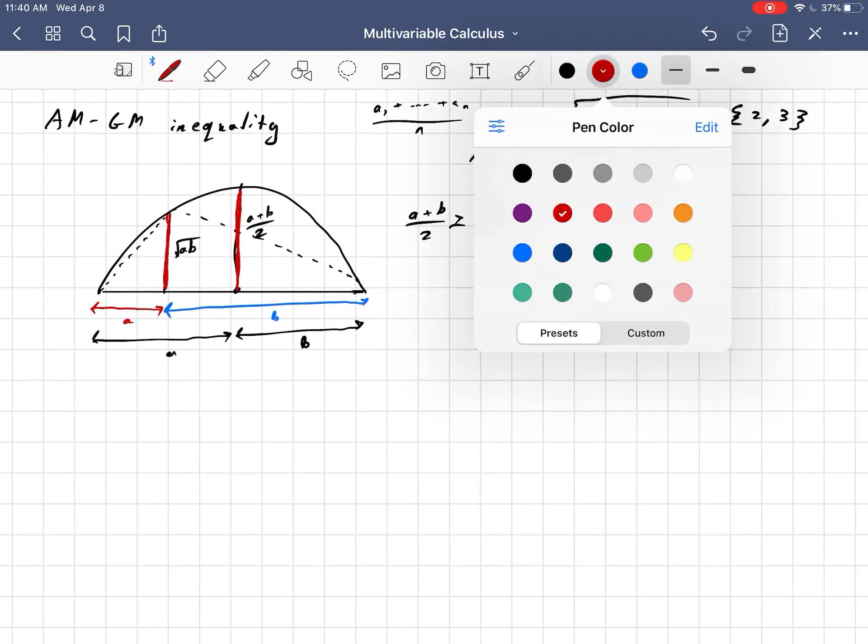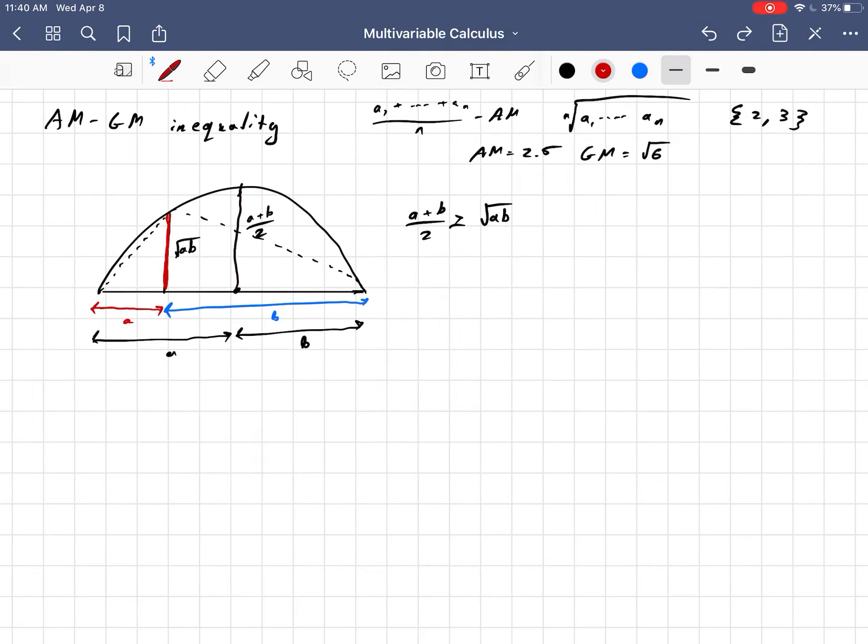But as the red segment—well, there's two red segments, right?—as the red segment moves farther away from the center point of the circle towards the edges, the arithmetic mean will get increasingly greater than the geometric mean. And that completes it.